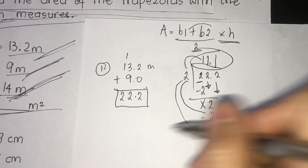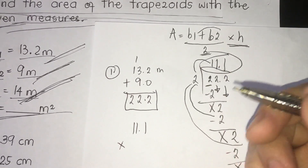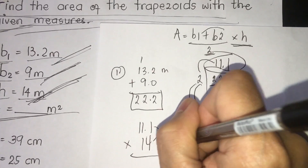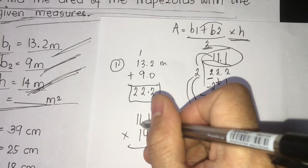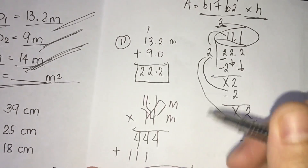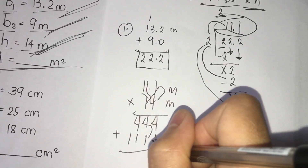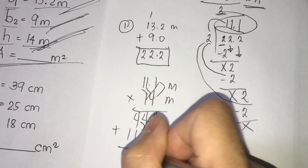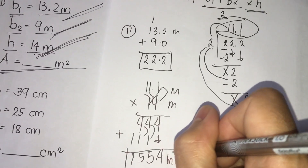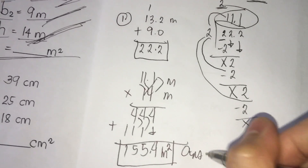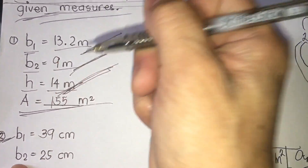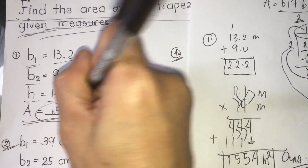We have 11.1 times 14 meters — multiplying step by step: 1 times 4 is 4, 1 times 1 is 1, adding gives us 155.4. So our answer for number one is 155.4 meters squared. I'm going to write here: number one is 155.4 meters squared.